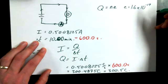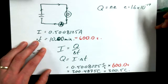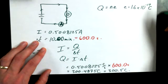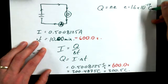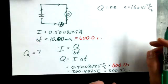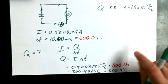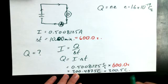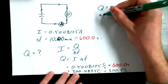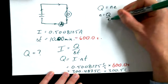Is it coulombs per charge or charges per coulomb? Coulombs per charge. So we're going to say coulombs per charge and do some isolation. We know the Q value and want to find N, so N equals Q over E.